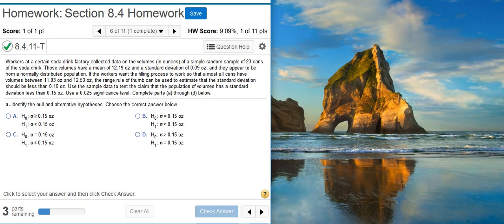Here's our problem statement. Workers at a certain soda drink factory collected data on the volumes in ounces of a simple random sample of 23 cans of the soda drink. Those volumes have a mean of 12.19 ounces and a standard deviation of 0.09 ounces, and they appear to be from a normally distributed population.